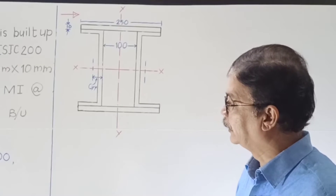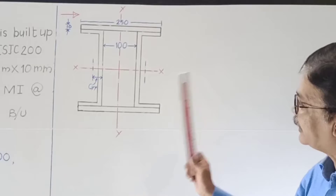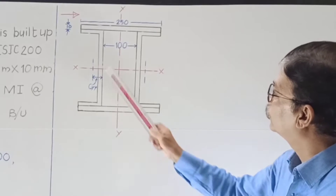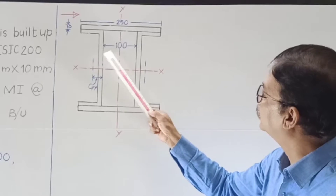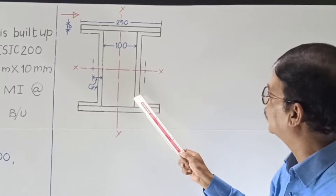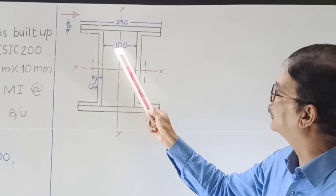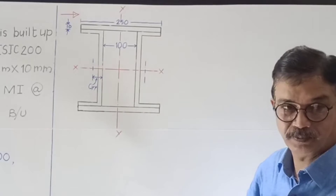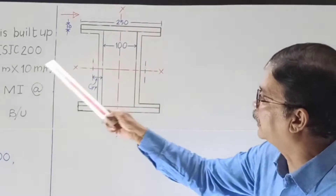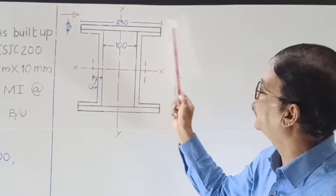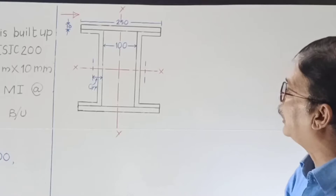CYY, that is the distance of the YY axis of each channel from the back, is 19.7 mm. Now let us see the arrangement. This built-up section is as shown in the figure. This is one channel and this is another channel. They are placed back to back with a distance between their backs of 100 mm. The plates are 250 mm by 10 mm.